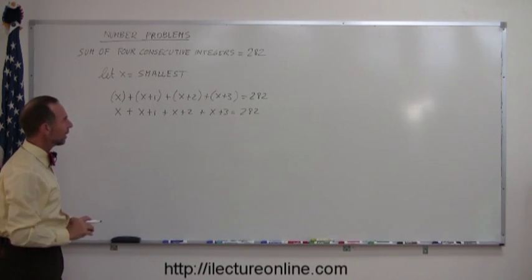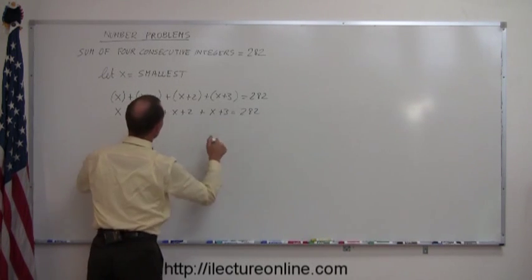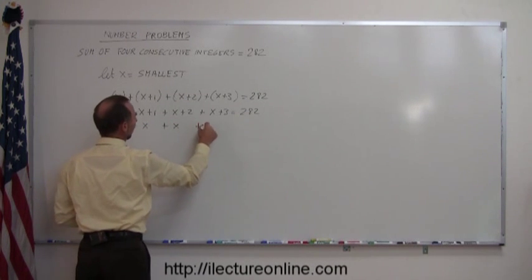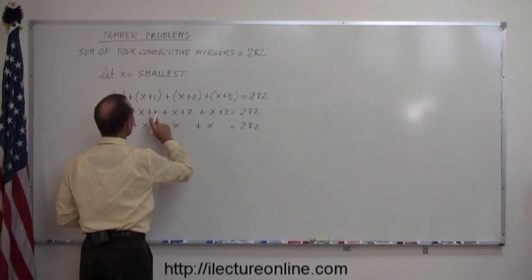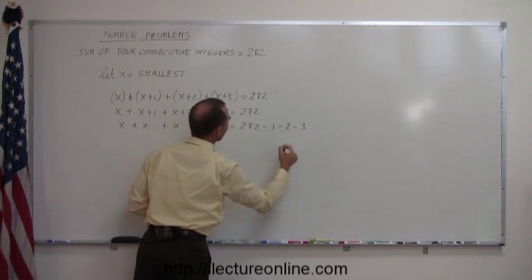Okay, the next thing, I want to move all the x to the left side, which they're already there, and then move all the numbers to the right side. So that gives me x plus x plus x plus x, they're still there, equals 282, and I move the numbers, the one, the two, the three, to the other side, this becomes minus one, minus two, minus three.